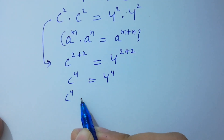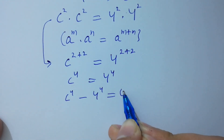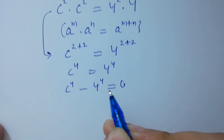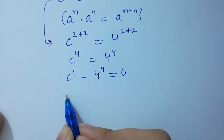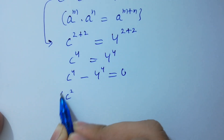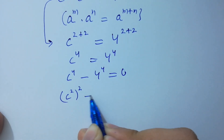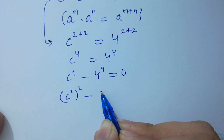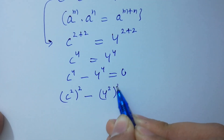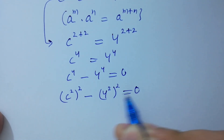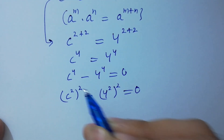So c to the power 4 minus 4 to the power 4 equals 0. This is the same as c squared, quantity squared, minus 4 squared, quantity squared, equal to 0, because 2 times 2 equals 4.